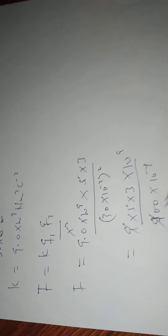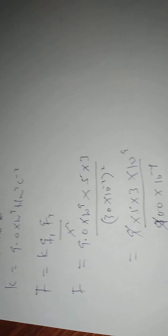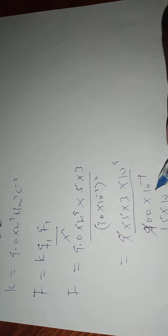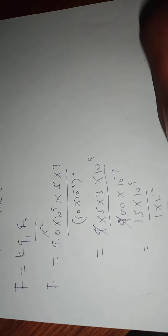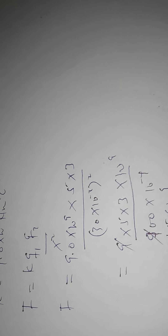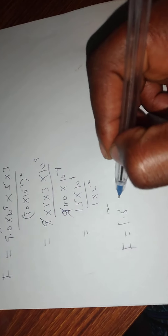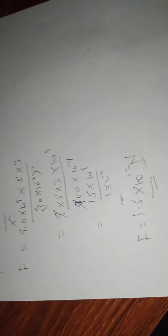So this gives 15 times 10 to the power 9, all over 1 times 10 to the power negative 2. When you do your calculation, you should be arriving at 1.5 times 10 raised to the power 12, and the answer is in newtons. So this is what you get for the force.